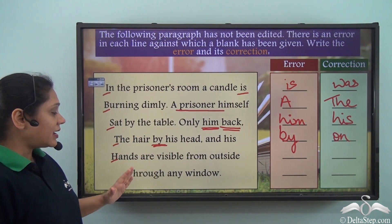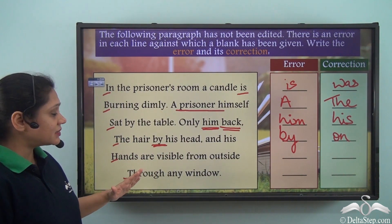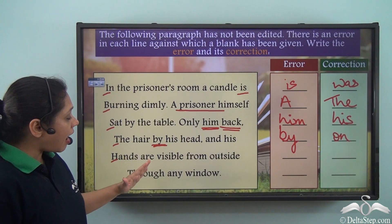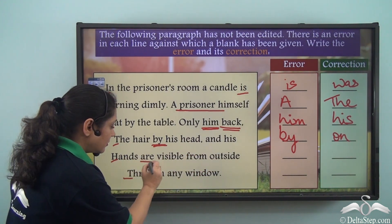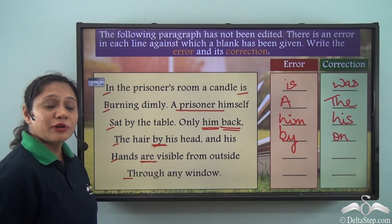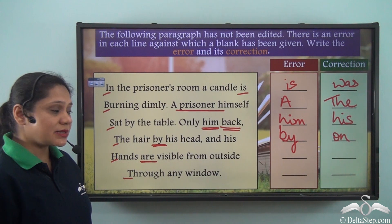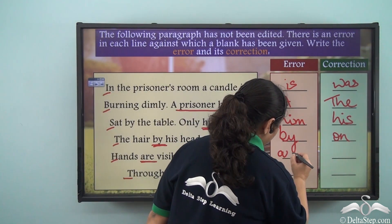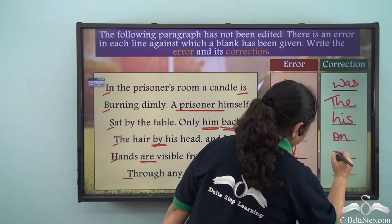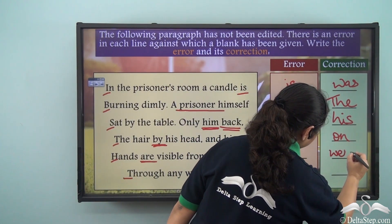And his hands are visible from outside. Again, we have to write it in past tense, so instead of 'are' it should be 'were'.